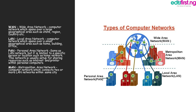The first type of network is WAN, short for Wide Area Network. This is a computer network that spans over a large geographical area such as a state, region, or country — for example, a network between Nigeria and Italy, or Nigeria and Australia. The second type is LAN, the Local Area Network.